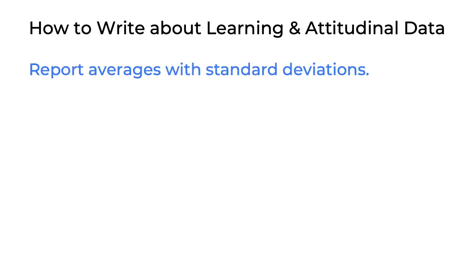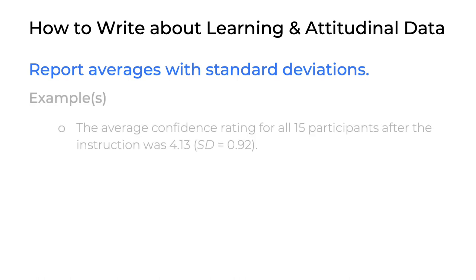As a final reminder, we want to emphasize how to report averages with their standard deviations. For example: 'The average confidence rating for all 15 participants after the instruction was 4.13, standard deviation = 0.92.' It's important that there's a leading zero on the standard deviation, because standard deviations can be greater than one. Also notice that both the average, 4.13, and the standard deviation, 0.92, use the same number of decimal places. Typically, you'll want to report two decimal places for the types of data we're working with in LTCH 690.